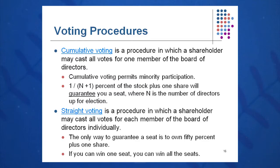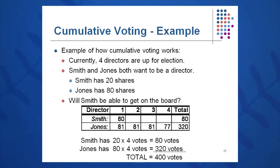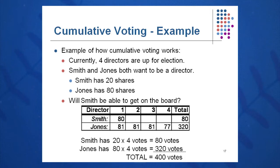Let's see how that works under cumulative voting — there's a good example in our text with Smith and Jones. Currently, four directors will be elected, so N equals four. Mr. Smith and Mr. Jones would both like a seat on the board of directors. The question is: how many shares do they need to own to guarantee themselves a seat on the board?